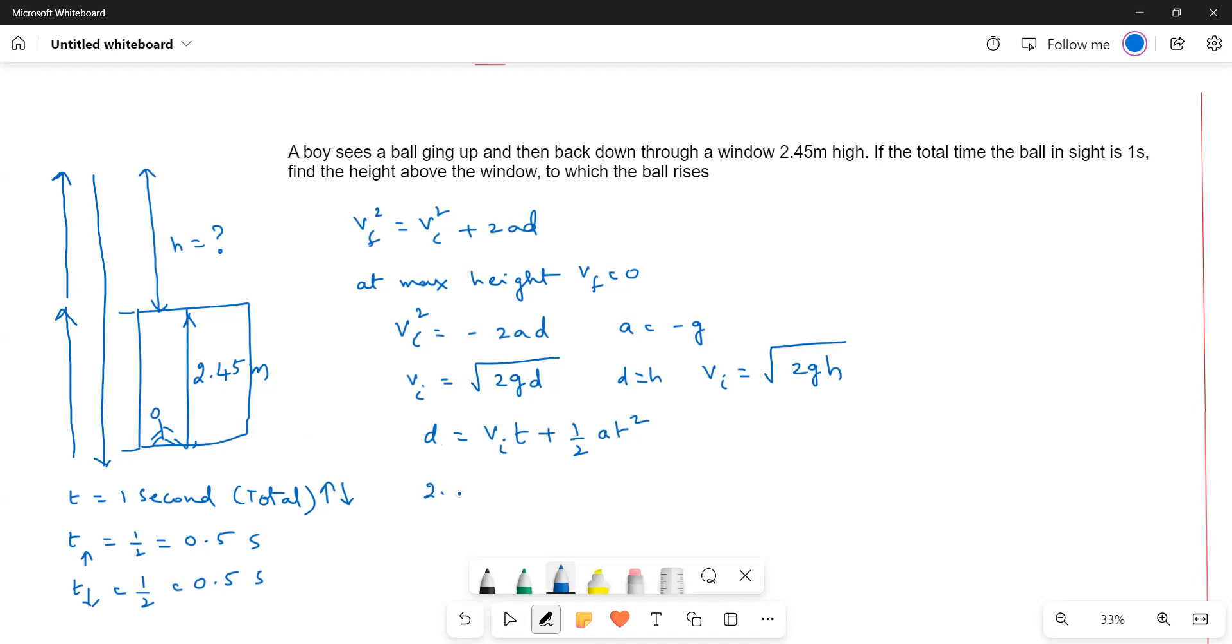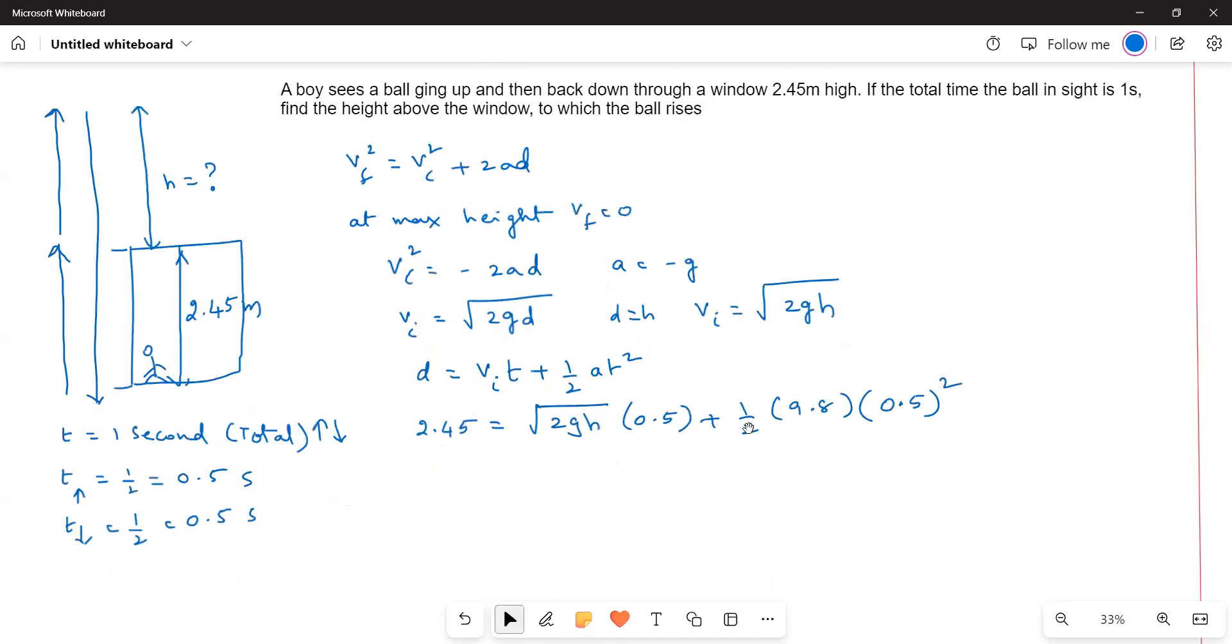This value is 2.45. So 2.45 is equal to root 2GH times time is half second, that means 0.5, plus half into G value, we know 9.8 times T is 0.5 squared. Let us solve this one.